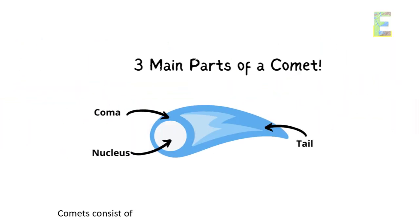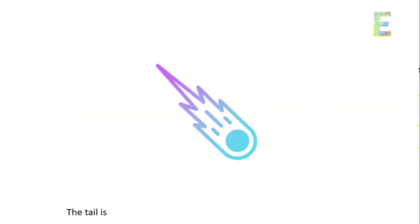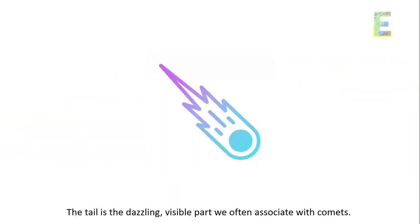Comet composition. Comets consist of three main components: the nucleus, coma, and tail. The nucleus is the solid, central core of the comet, while the coma is a cloud of gas and dust that surrounds it. The tail is the dazzling, visible part we often associate with comets.